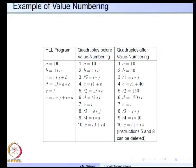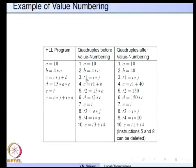Then we have the third quadruple: i*j. i and j are new names and they need to be entered into the appropriate entries in the table. i*j is a new expression, so we need a different value number for the expression also. The important thing is that the name t1 and the expression i*j will be assigned the same value number. Whenever we find t1 we know it is i*j, and whenever we find i*j we can use t1 for that.